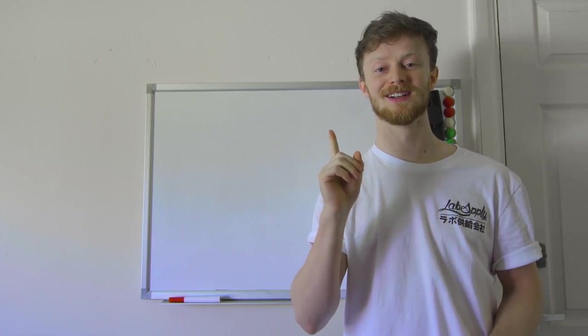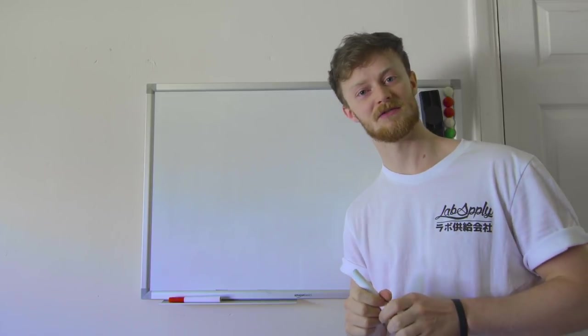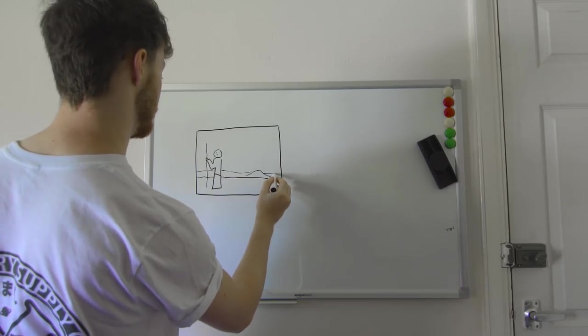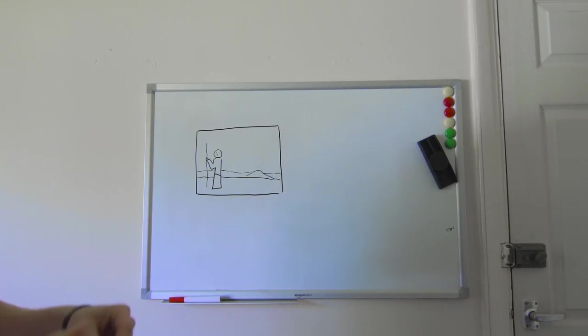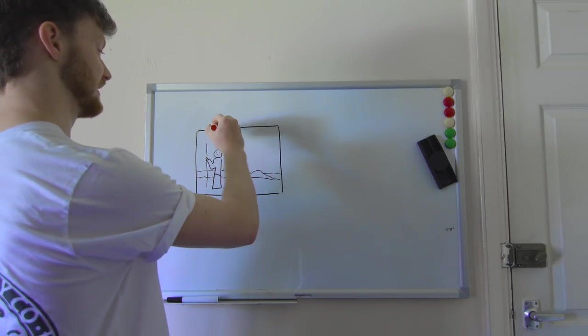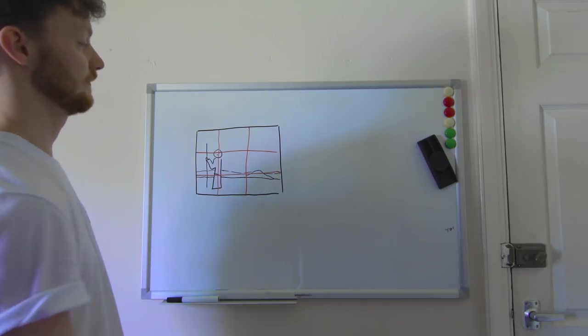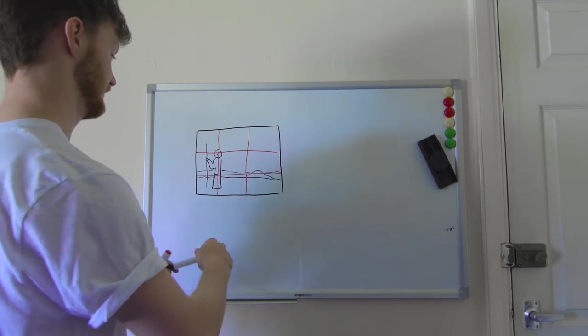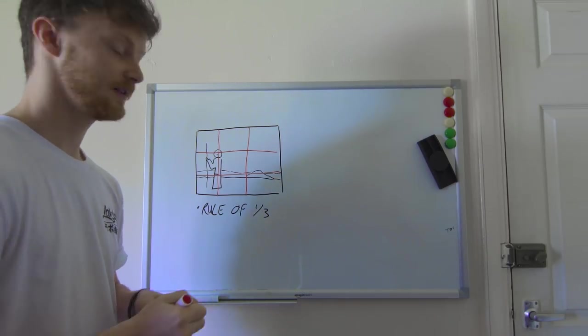First thing I want to talk about. Who here is familiar with this? So we got a little man here. The Rule of Thirds. And this thing, you know, people make that little box with the Fibonacci spiral.